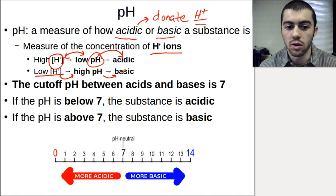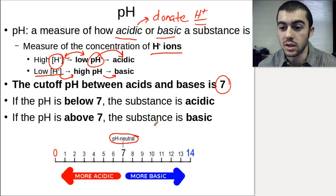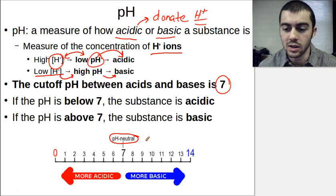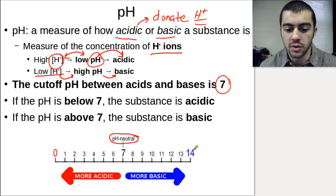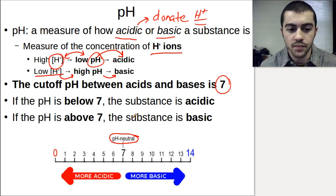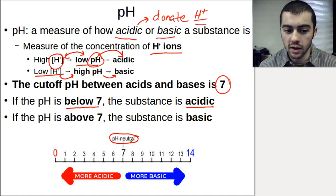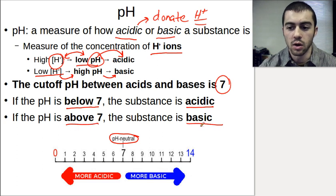The cutoff pH between acids and bases is 7 — pH 7 is neutral, meaning neither acidic nor basic. The pH scale ranges from 0 to 14, with 7 as the midpoint. Anything from 0 up to (but not including) 7 is acidic, and anything above 7 up to 14 is basic.